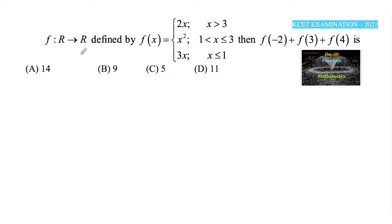f from R to R defined by f(x) equals 2x for x greater than 3, x squared for 1 less than or equal to x less than or equal to 3, and 3x for x less than or equal to 1. The real numbers are divided into three intervals.